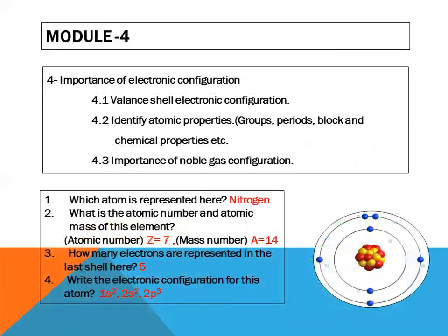Module number four. In module number four, we will be going to discuss about the importance of electronic configuration. To know about the importance of electronic configuration, we must know about the valence electronic configuration and then identify atomic properties that is groups, period, blocks and chemical properties, etc.